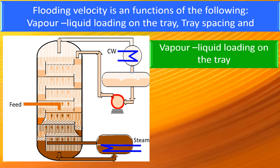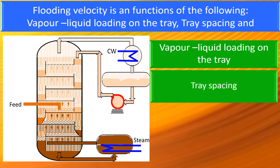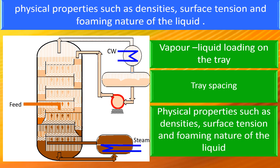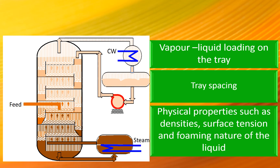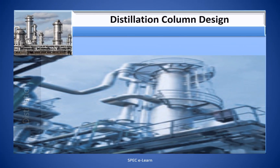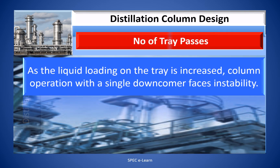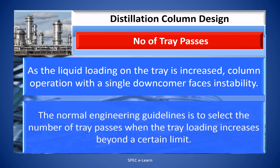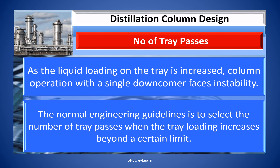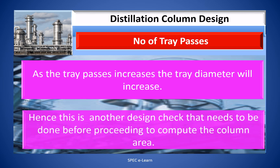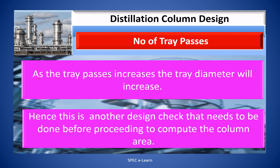Flooding velocity is a function of the following factors: vapor-liquid loading on the tray, tray spacing, physical properties such as densities, and the foaming nature of the liquid. As the liquid loading on the tray is increased, column operation with a single downcomer faces instability. The normal engineering guideline is to select a number of tray passes when the tray loading increases beyond a certain limit. As tray passes increase, the tray diameter will increase — hence this is another design check that needs to be done before computing the column area.